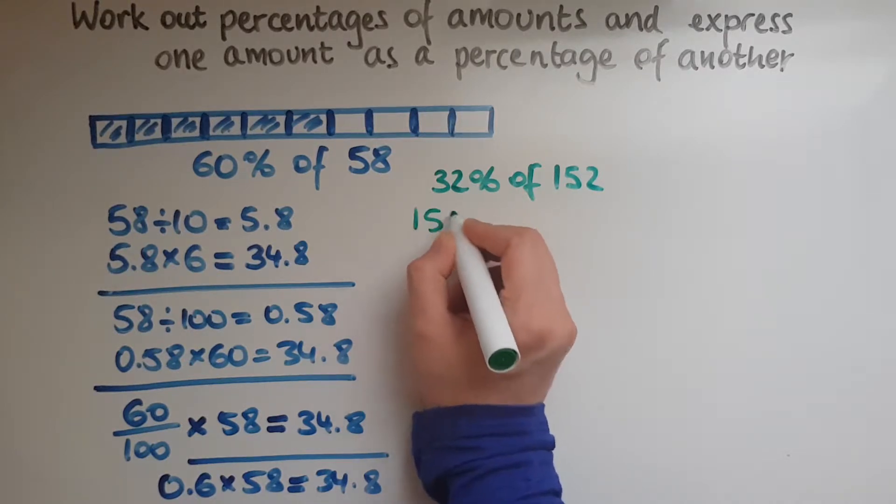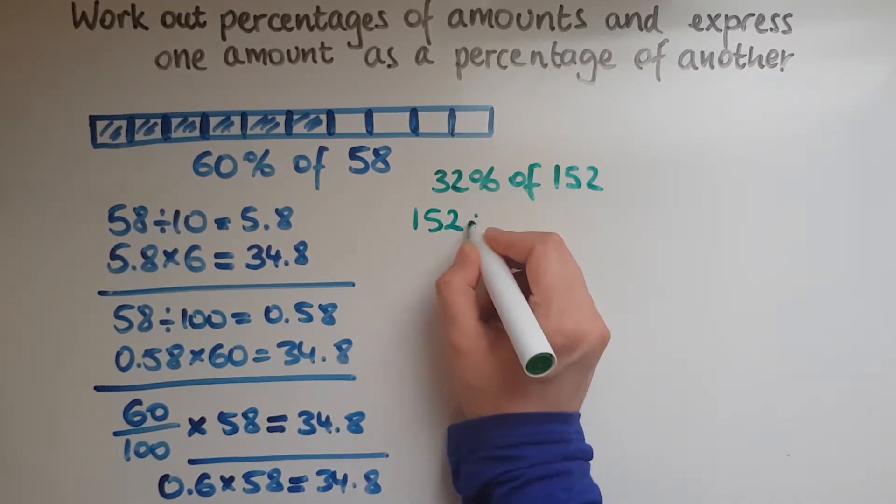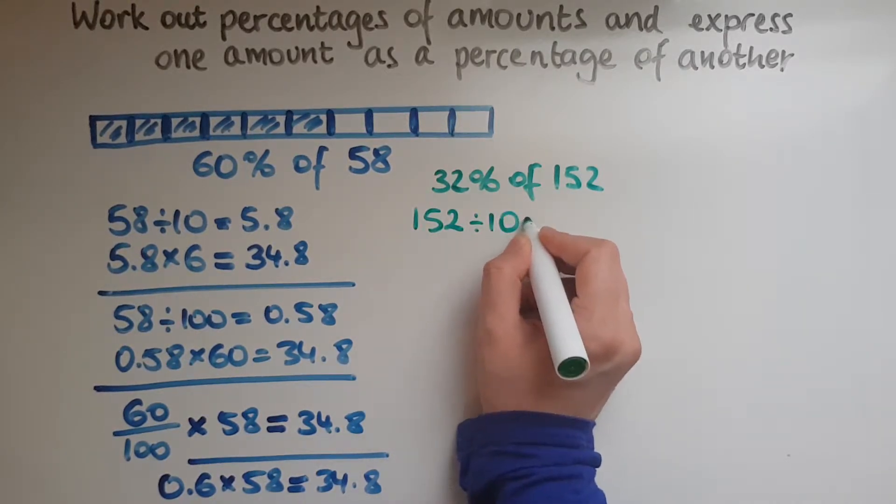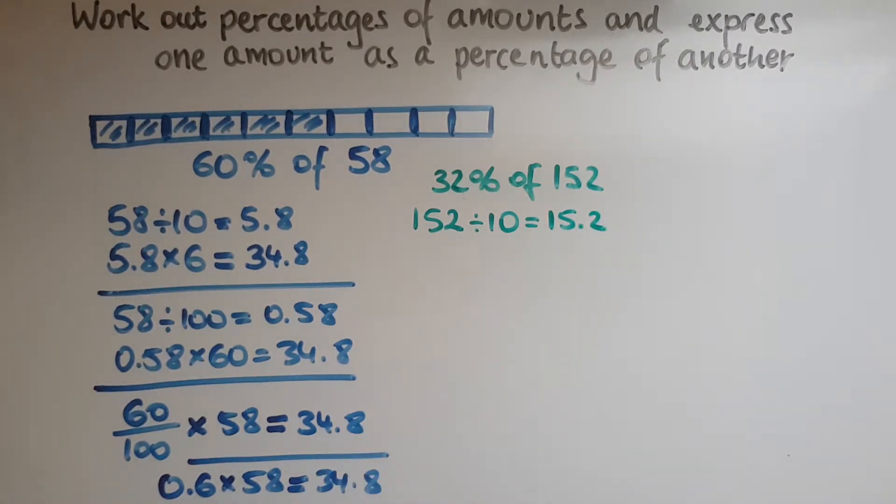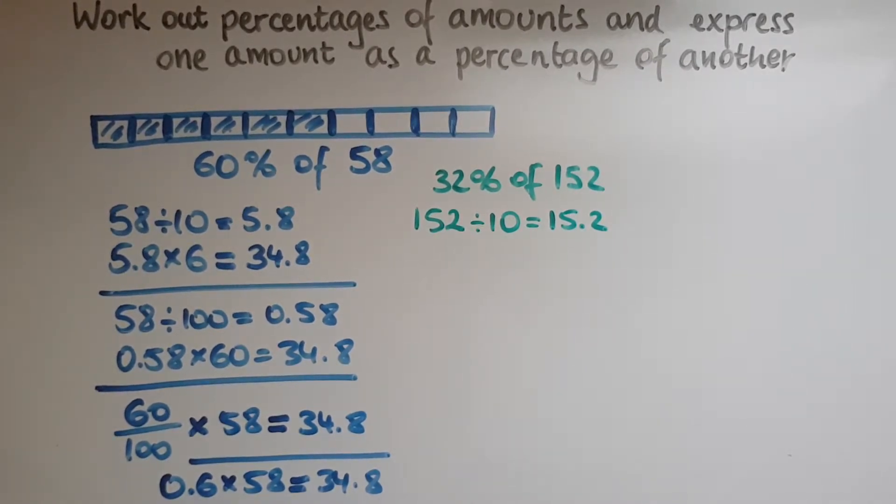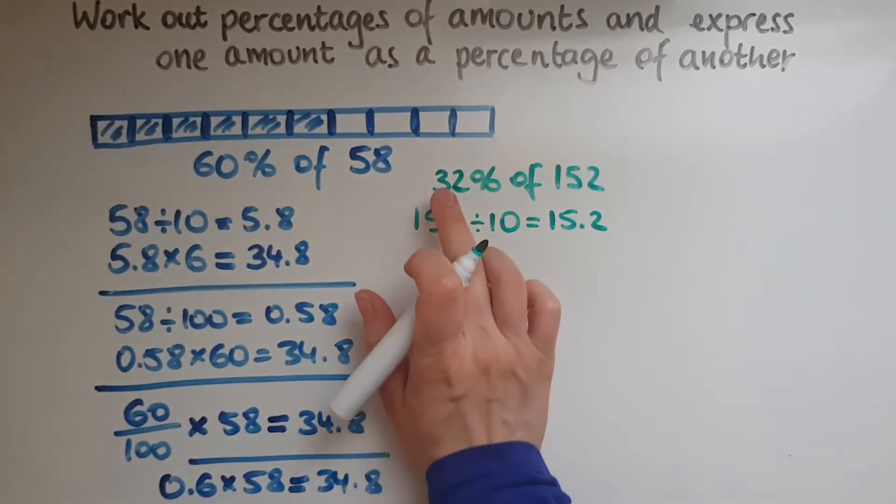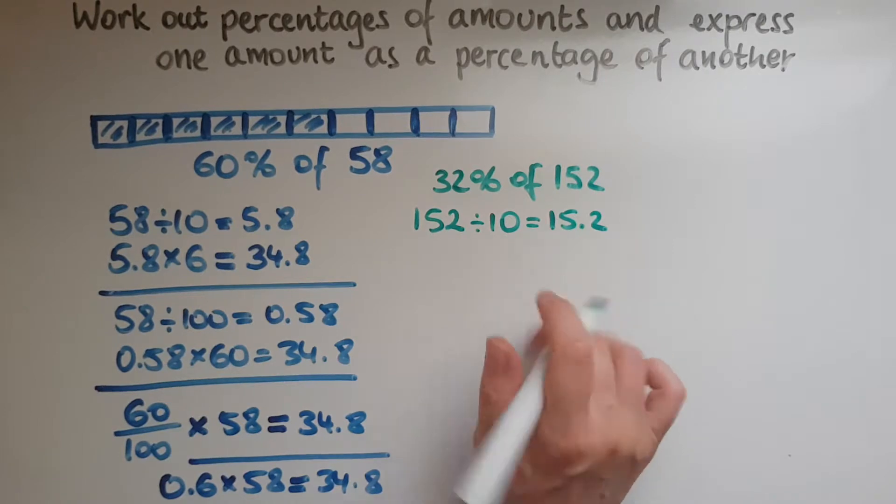So 152 divided by 10 gives us 15.2. So we've got 10%. Now we'll get 30% by multiplying this by 3.